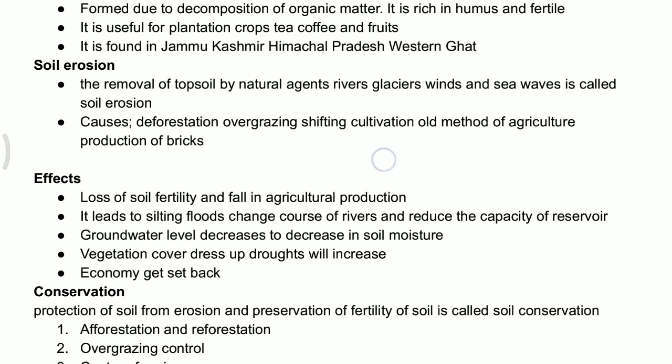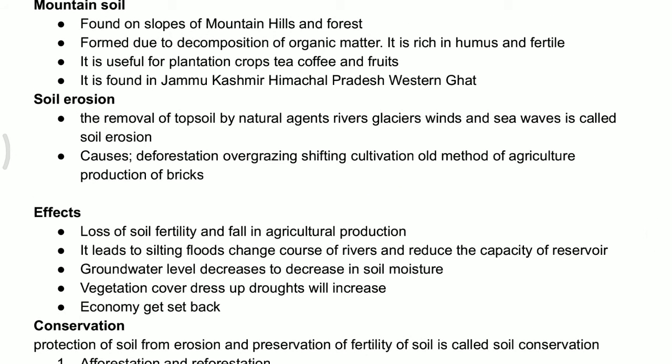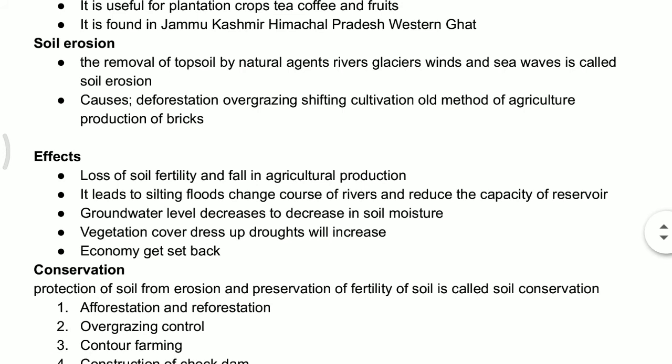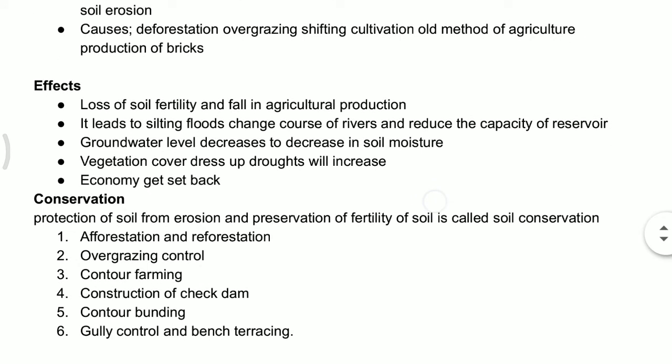Natural agents of soil erosion include rivers, glaciers, winds, and sea waves. Because of these agents, the topmost layer washes away — that is what we call soil erosion. Soil erosion takes place because of many reasons: deforestation, overgrazing, shifting cultivation, old methods of agriculture, and production of bricks. These are all notable causes that lead to soil erosion.